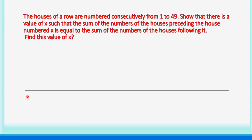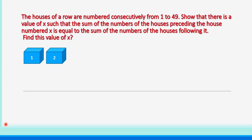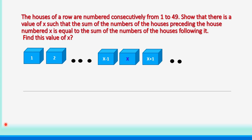It is given that houses of a row are numbered consecutively from 1 to 49. We have to show there is a house such that the sum of the numbers of the houses preceding the house numbered x is equal to the sum of the numbers of the houses following it. This is what we want to prove. The houses are numbered from 1 to 49.